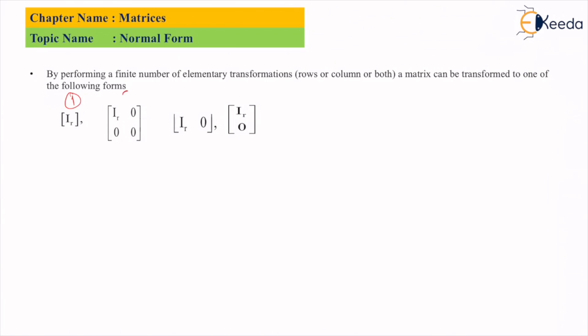The four forms that you can see here are called the normal form of a given matrix.